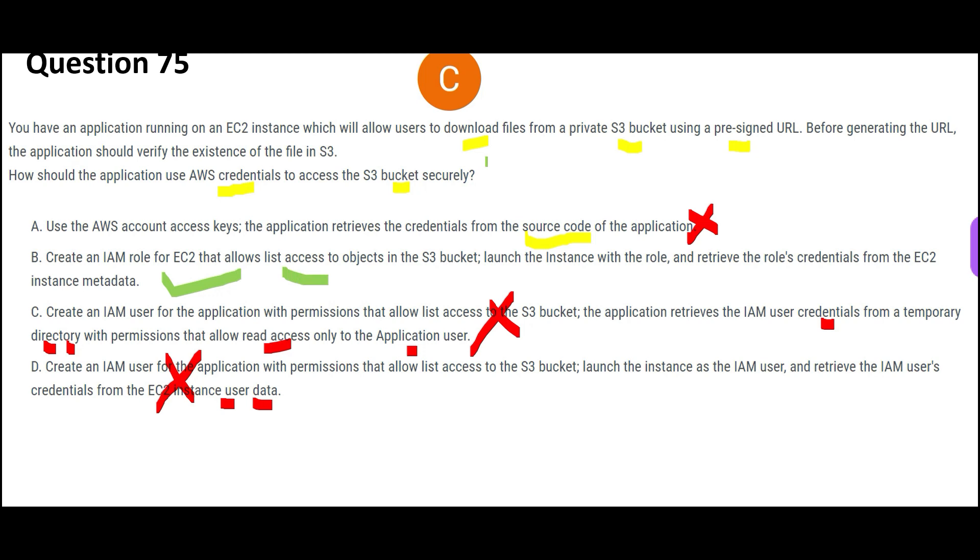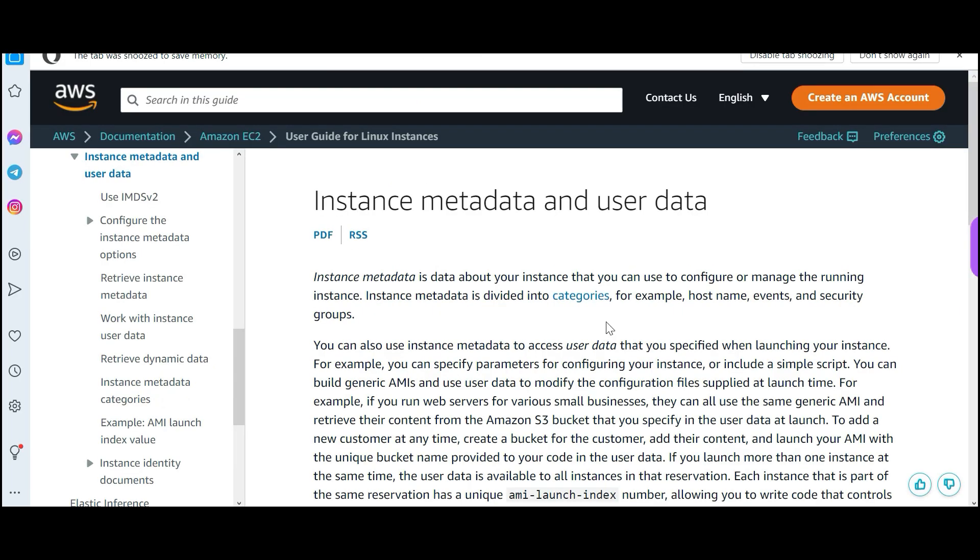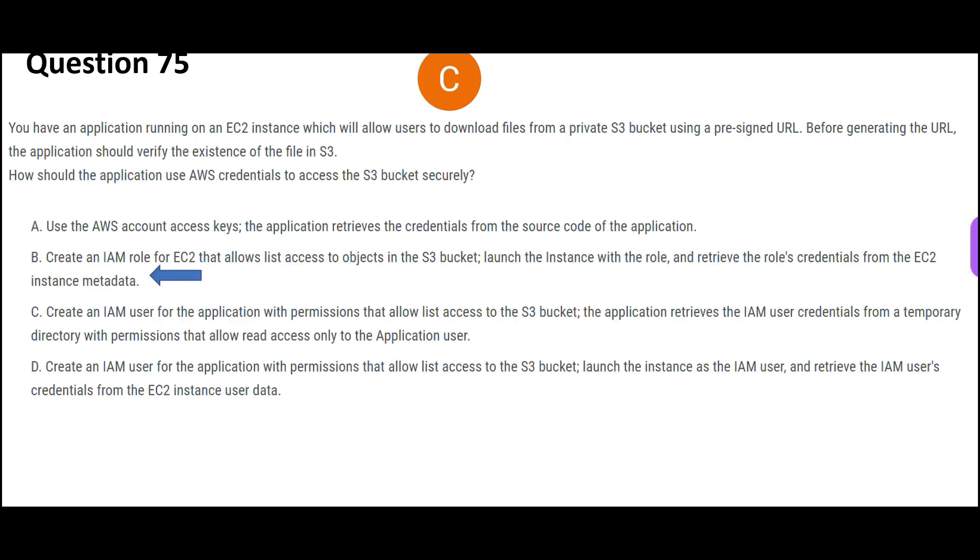D is wrong because user data is used for bootstrapping and not for storing credentials or any or roles. So D is wrong. Now let us look at C. This is correct. There are multiple things this is doing: first, it is creating an IAM role on EC2 which will give you list access because you want to download the file. Before downloading the files, you want to see the files. You want to look at all the files that are there for you to download, so that privilege we will give you. Then it will launch the instance with that role. So you already created an IAM role for EC2, you will launch the instance with the role, and from where will you retrieve the credentials? You will retrieve it from instance metadata.